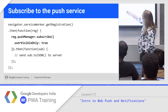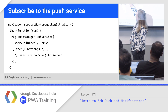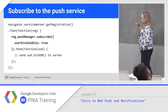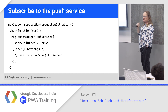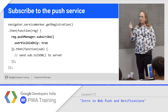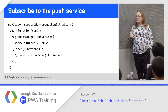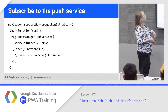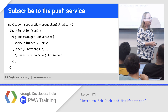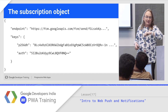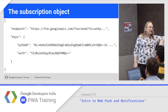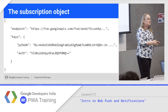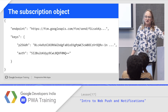To actually subscribe: get the registration and call subscribe. userVisibleOnly means every push message will generate something the user can see. If that's not true, you could send push messages with empty or data-only payloads routed to your code but never notified to the user — but that's not considered a best practice; use background sync instead. You get a subscription and store it to the server as JSON or something else. The subscription object has a URL you call to trigger the push message, and keys for authenticating this particular subscription, so the server knows who it is and whether it's valid.